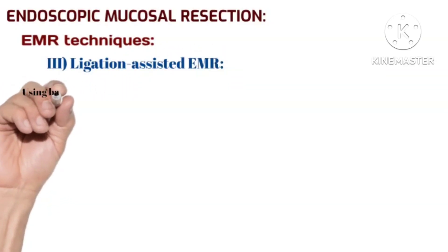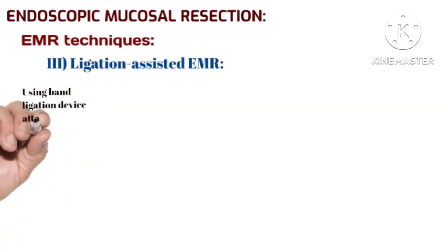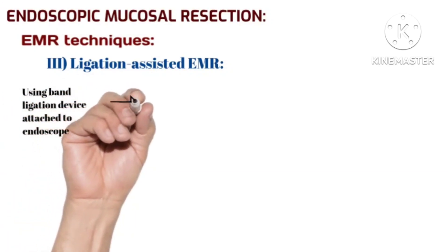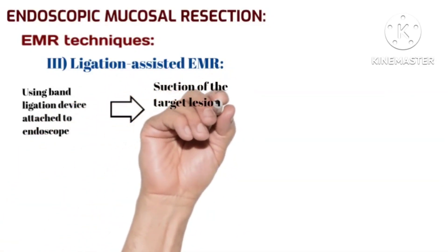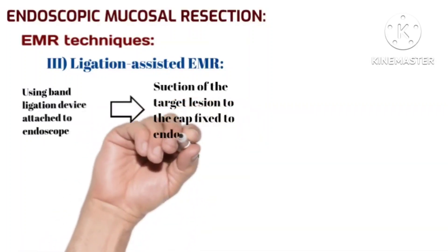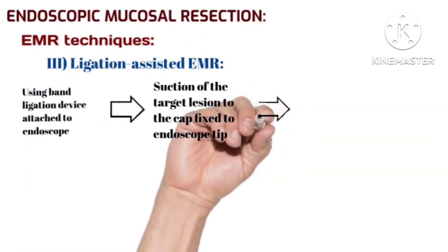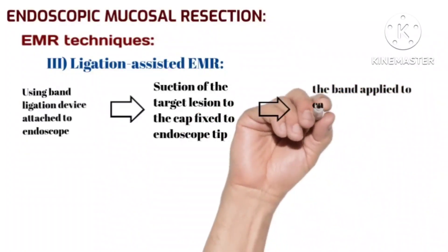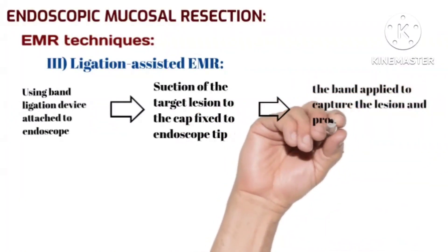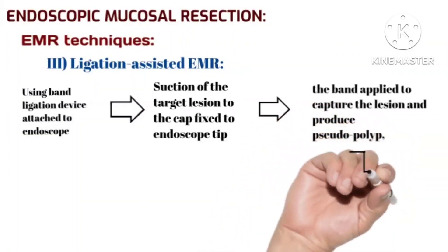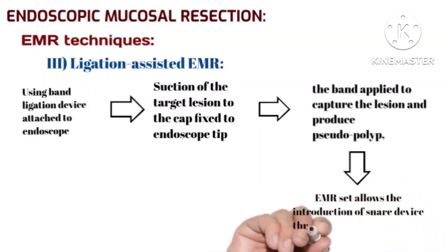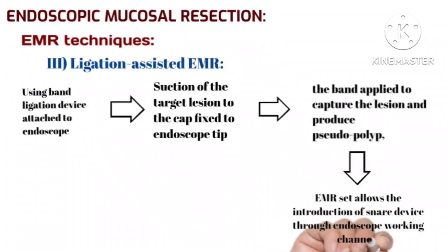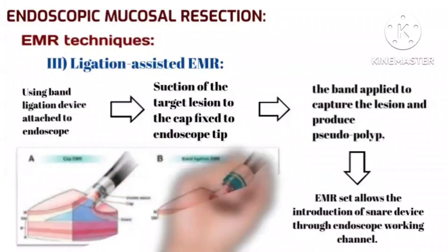The third EMR technique is ligation-assisted endoscopic mucosal resection, using a band ligation device attached to the endoscope. The target lesion is suctioned into the cap fixed to the endoscope tip, and a band is applied to capture the lesion and produce a pseudopolyp. The snare device is then introduced through the working channel to facilitate removal of the polyp. This image shows the steps of ligation-assisted EMR.